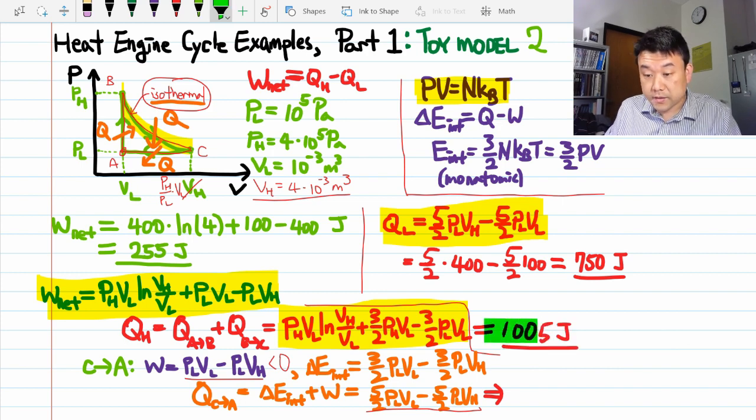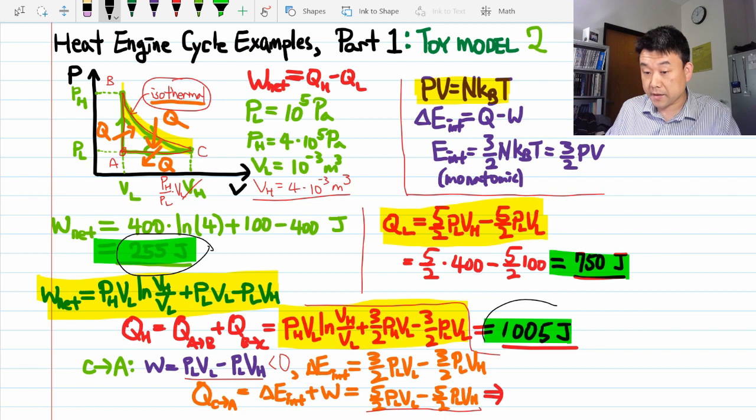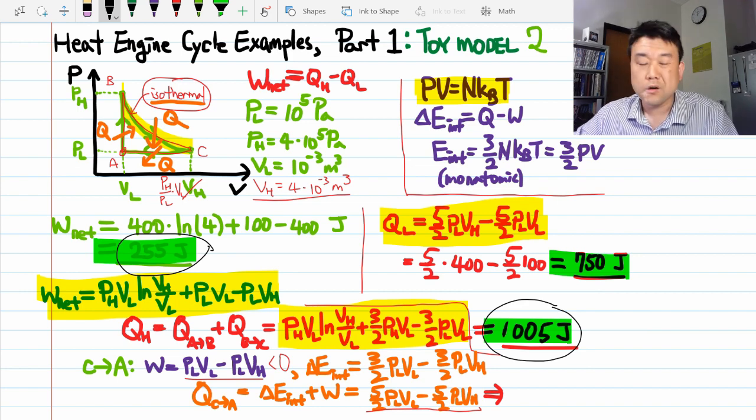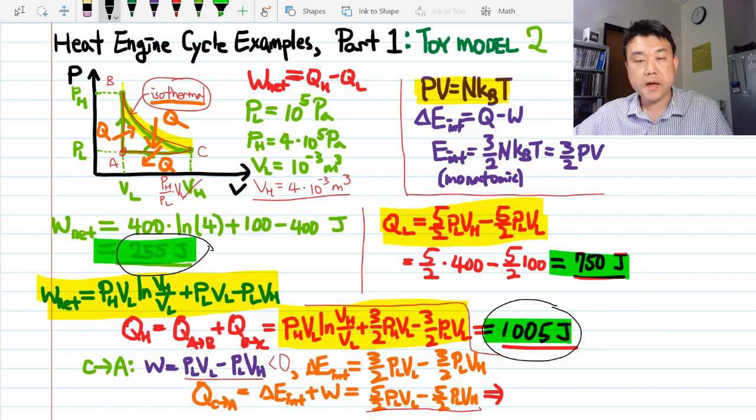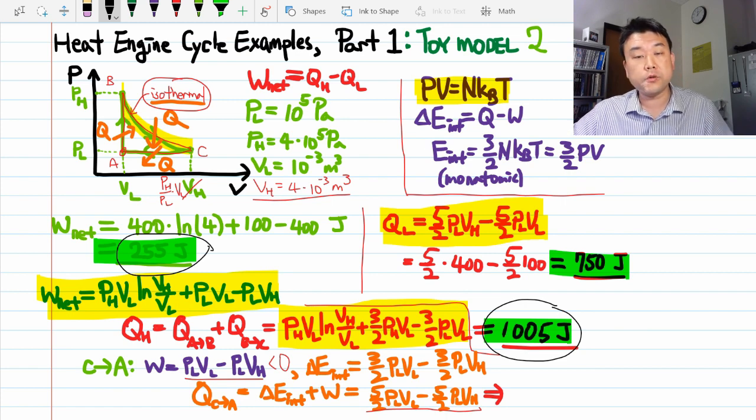So, when you look at these numbers, it looks a little bit better here. This is about 25% of the input heat. Whereas before, 100 out of 650 was close to 15%. So, proportionally, greater portion of the input heat is being turned into work. Now, you might wonder what's allowing this toy model number 2 to be more efficient compared to the toy model number 1.